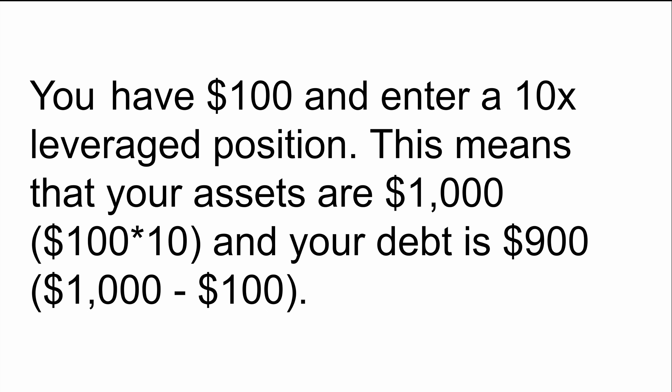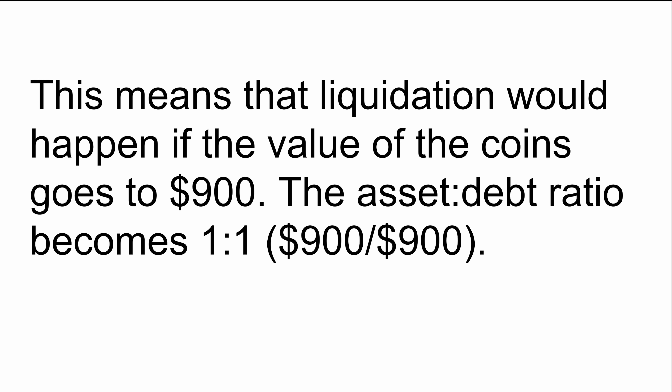So let's say as an example you have $100 and you enter a 10x leveraged position. What this basically means is that your assets are now worth $1,000, which is the $100 times 10, and your debt is $900, which is the $1,000 worth of assets minus your own $100 that you put in. So this would mean that liquidation would happen if the value of the coins goes to $900, because the asset-to-debt ratio then becomes one-to-one.